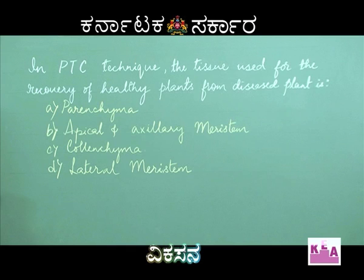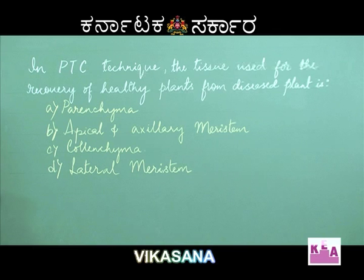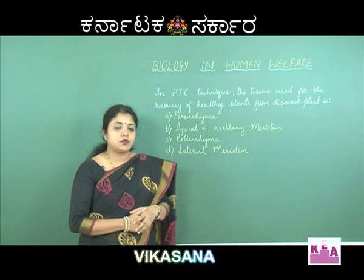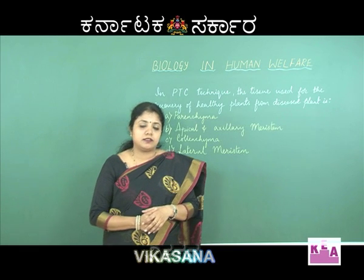The next question: In PTC technique, the tissue used for recovery of healthy plants from a diseased plant is — option A, parenchyma; option B, apical and axillary meristem; option C, colenchyma; and option D, lateral meristem. PTC or plant tissue culture employs selecting tissue from a healthy plant and raising several plants.